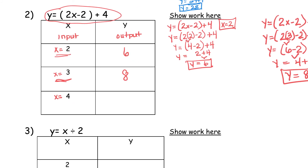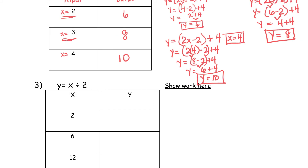Try the last one on your own — copy the problem. A good math student follows through, does all the work, and doesn't take shortcuts because shortcuts could lead to mistakes. Pause the video and give it a shot. And for the last one, when x is equal to 4, y is equal to 10. Hope you did that one well.